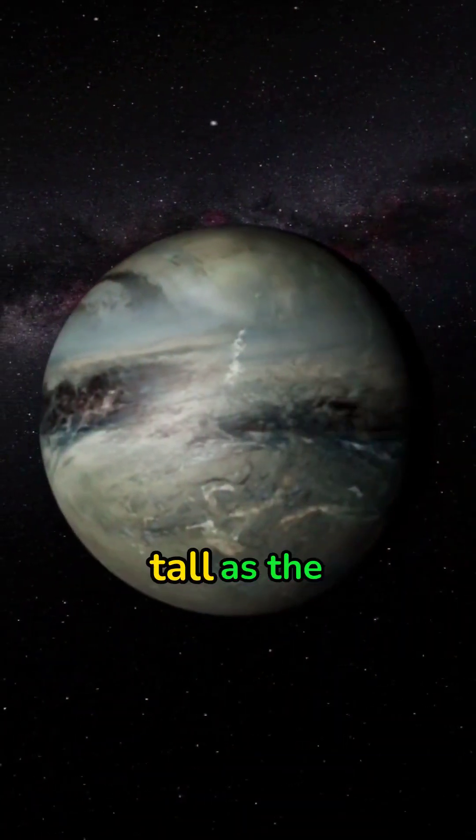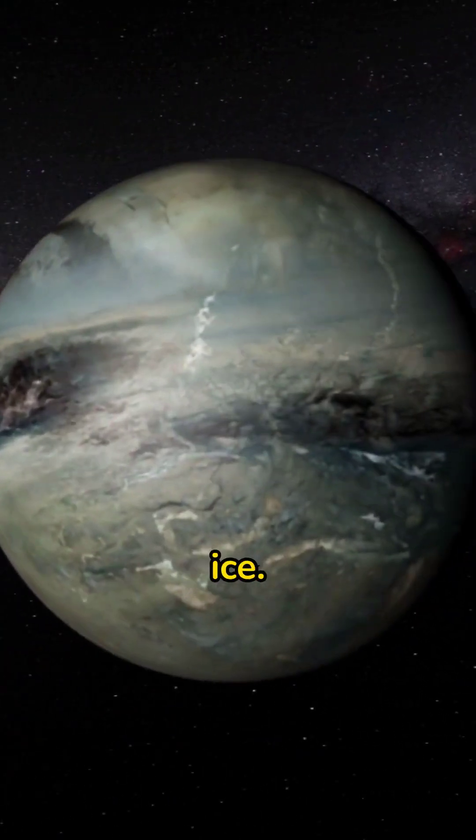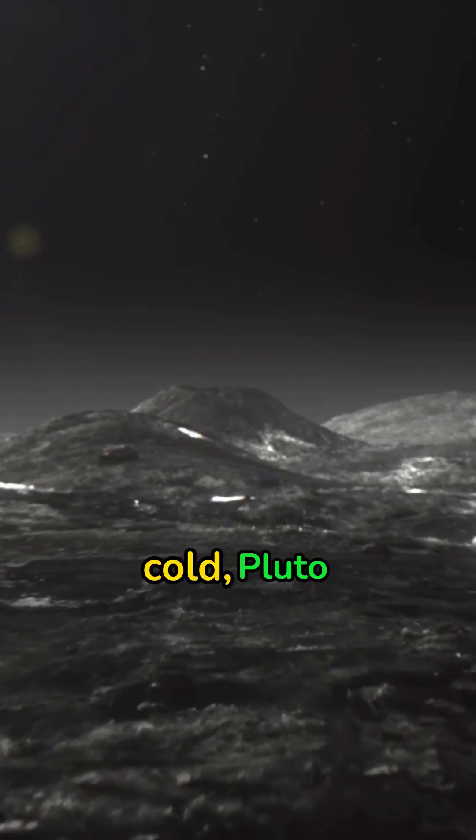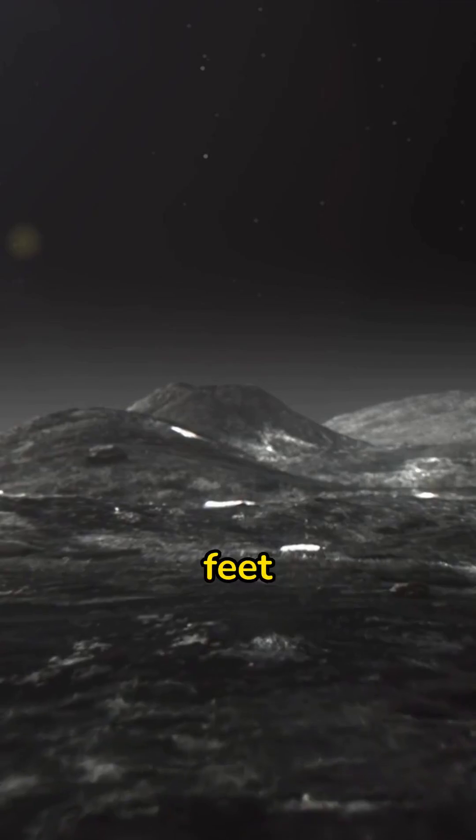Fact 2. Pluto has mountains as tall as the Rockies but made of water ice. Despite being incredibly cold, Pluto has mountains reaching 11,000 feet high.